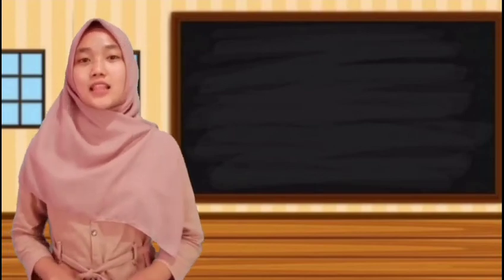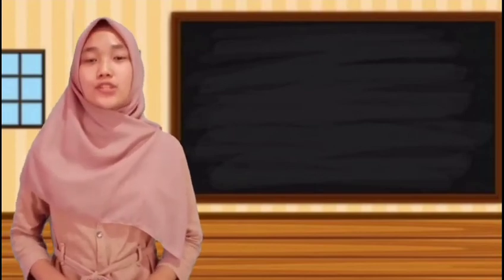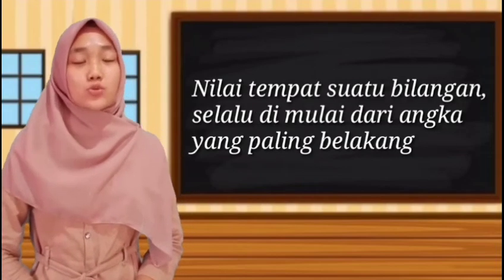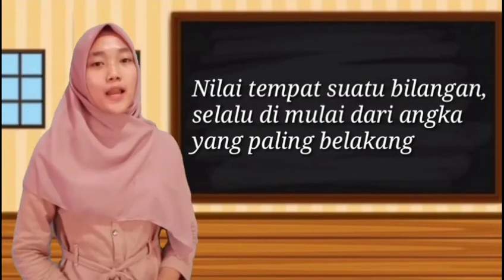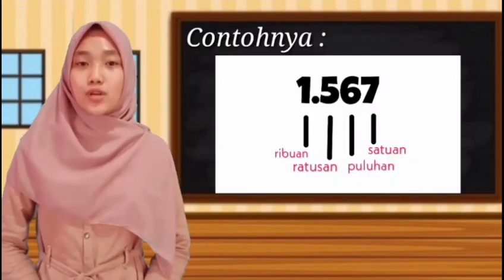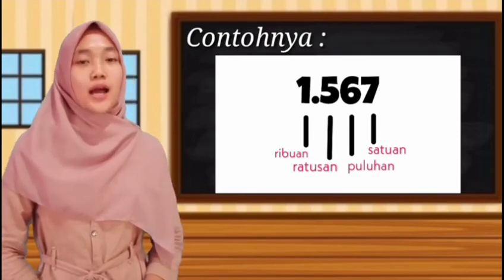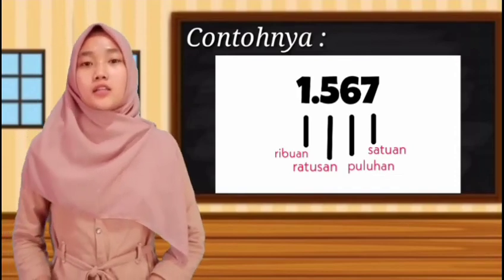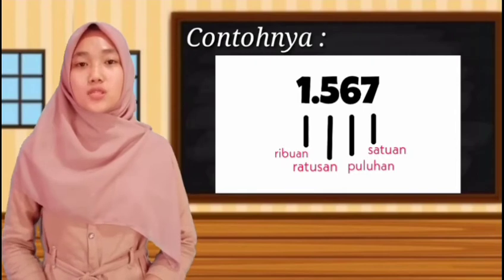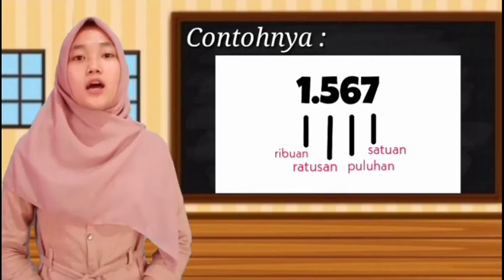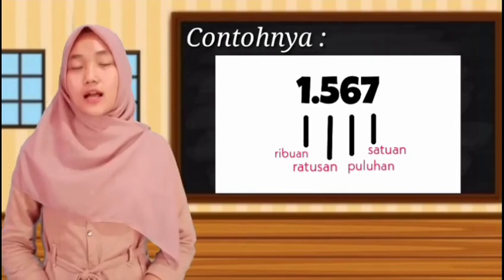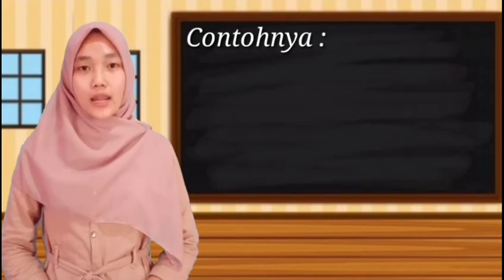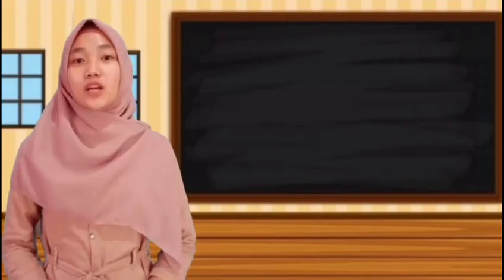Setelah kita belajar tentang nama lambang bilangan cacah, selanjutnya kita ke pembahasan yang ketiga yaitu nilai tempat. Nilai tempat suatu bilangan selalu dimulai dari angka yang paling belakang. Contohnya 1.567. Mari kita cari nilai tempatnya: yang paling belakang itu tujuh — tujuh sebagai satuan, enam sebagai puluhan, lima sebagai ratusan, satu sebagai ribuan.